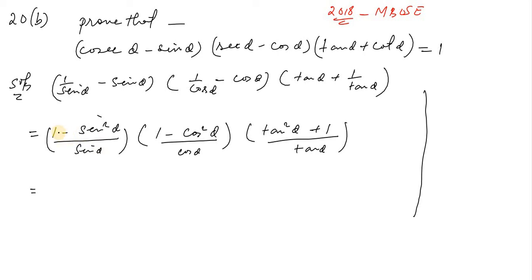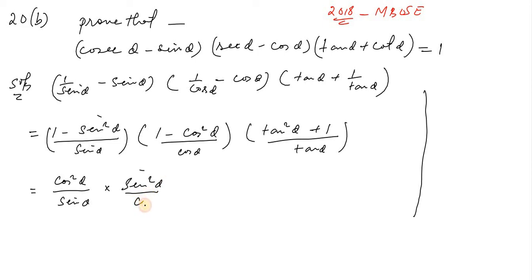Using this formula: one minus sin squared theta equals cos squared theta, divided by sin theta into one minus sin squared theta. One minus cos squared theta equals sin squared theta, divided by cos theta into one plus tan squared theta equals sin squared theta.